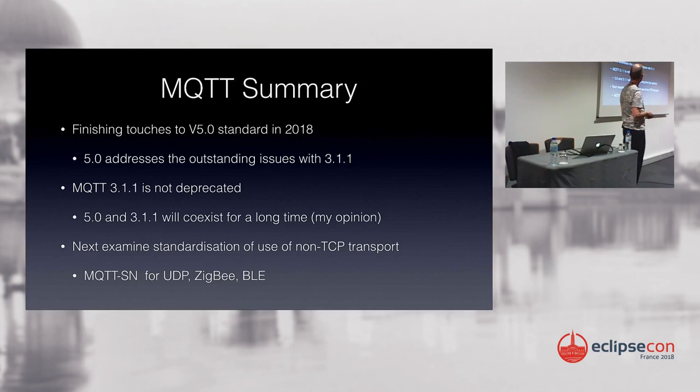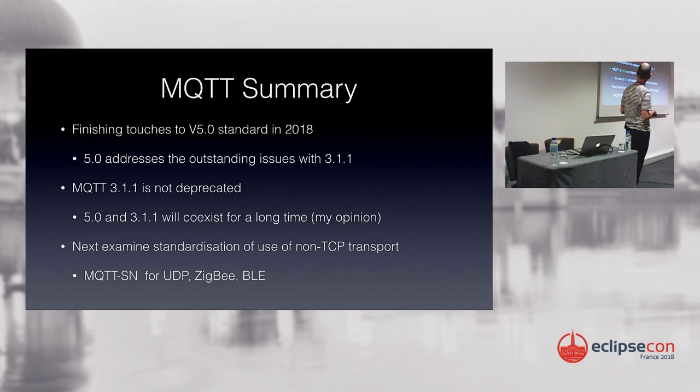A summary: we've almost finished the MQTT version 5 standard. MQTT 3.1.1 is not deprecated — it's still simpler than version 5, though the added complexity of version 5 is not great. I envisage they will coexist for a long time. For next steps in standardization, we'll probably look at MQTT-SN, which is a way of applying MQTT to non-TCP transports like mesh networks and UDP.